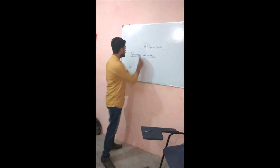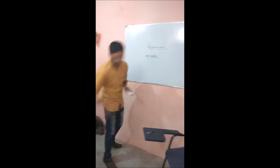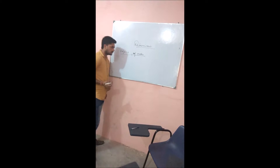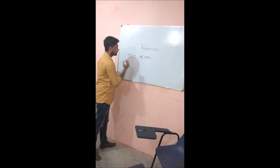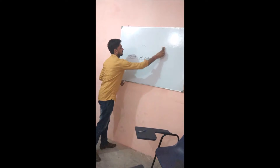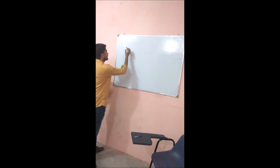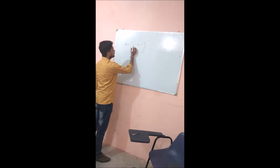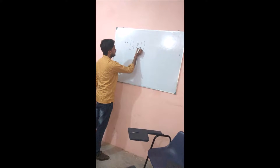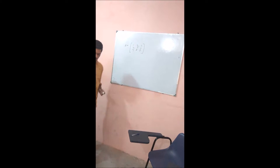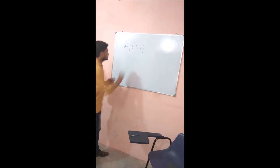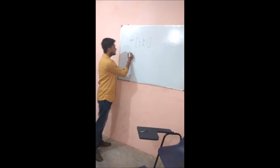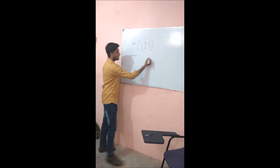Now we are going to talk about Adjoint of matrices. For the Adjoint of matrices, we are going to find the minor and cofactor. For example, we have a matrix: 1, 2, 3, 4, 5, 6, 7, 8, 9. We are going to find the minors and the cofactors.